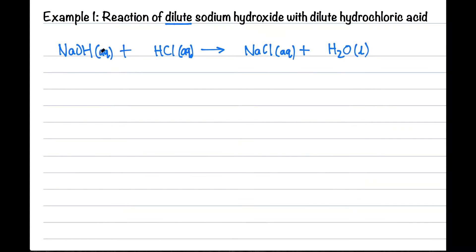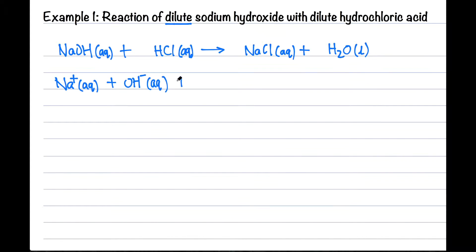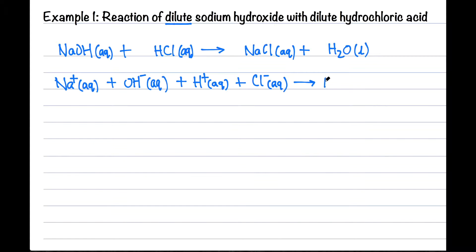The next step is to look for any items with aqueous and split them into their ions. For sodium hydroxide it dissociates to form sodium ions and hydroxide ions. For hydrochloric acid it undergoes dissociation to form hydrogen ions and chloride ions. On the other side, sodium chloride is aqueous so we split it up into its ions as well.